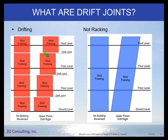Drift joints are joints that you would put in between every floor level that allow the framing or the finish to essentially stay rectangular or square, and thus the idea is that it doesn't parallelogram and doesn't have much distress. You can see here we have these drift joints in between each of the floor levels, and you can see when the building shifts to the right how there's that differential movement between this framing and that framing.